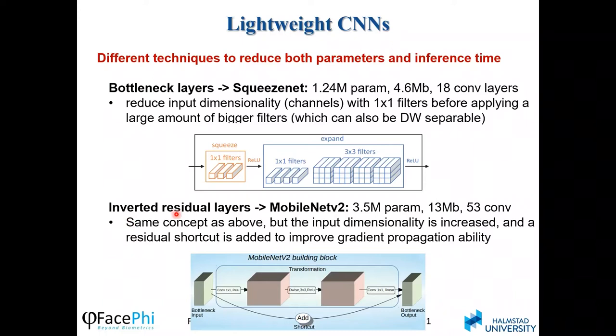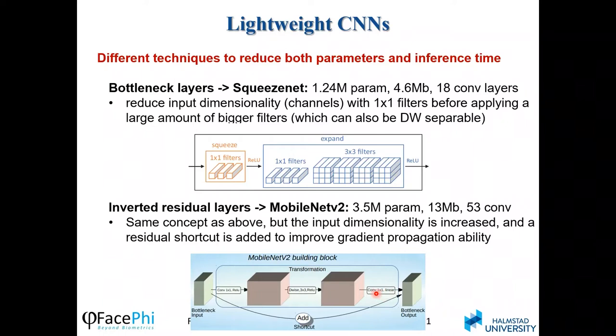Another technique is inverted residual layers, presented in MobileNet version 2. It is the same concept but in reverse: an input with reduced dimensionality is expanded using 1×1 filters, and then larger 3×3 filters — which can also be depthwise separable — are applied to this expanded input. The output with high dimensionality is then reduced again using 1×1 filters. The authors of this network also add a shortcut or residual connection between the input with reduced dimensionality and the output with reduced dimensionality.